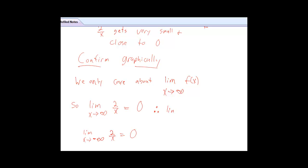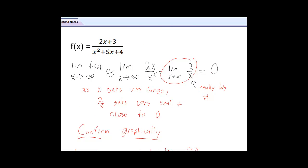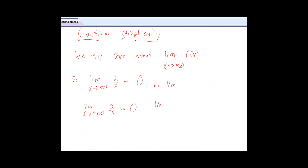It happens the same thing as you approach negative infinity. So, since our end behavior model does that, and it's a good model for our function in general, the limit as x approaches infinity of the original function is 0, and the limit as x approaches negative infinity is also going to be 0.